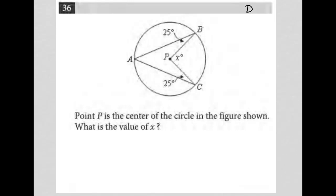This question is a diagram question. What we have here is a circle, and I see some radii — always pay attention to the radii. Then there's this weird shape on the inside. So let's read the question first: point P is the center of the circle, as shown in the figure. What is the value of X? We want this X degrees right here.